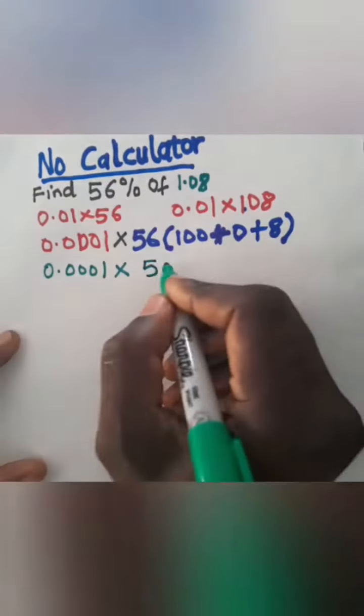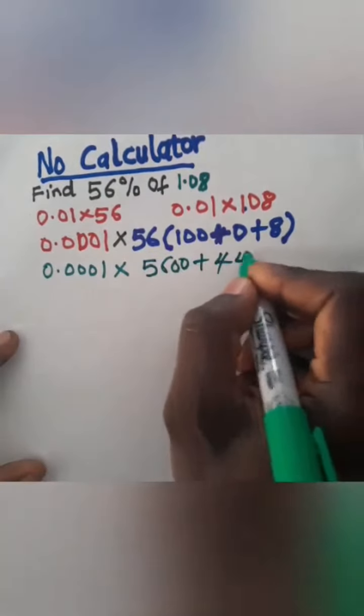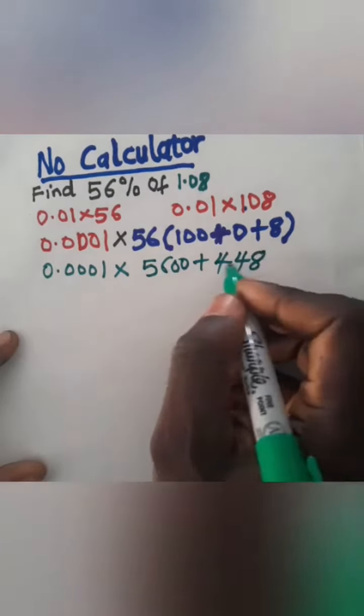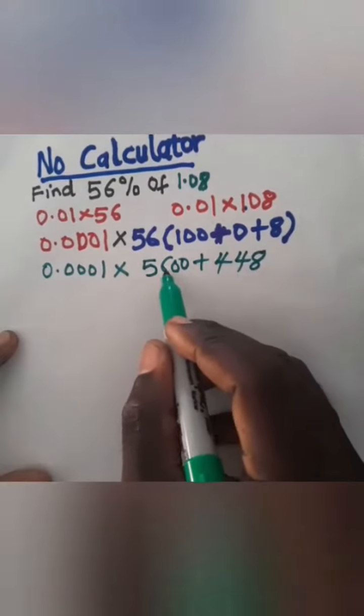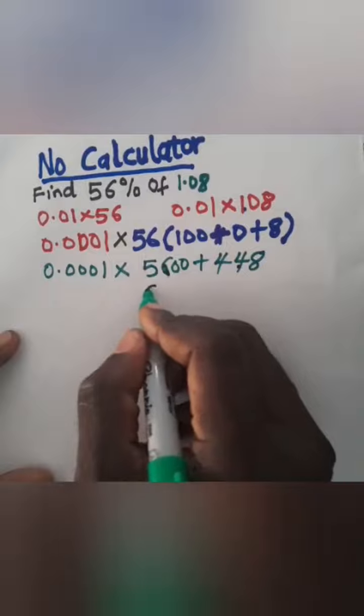So I'm going to add 5600 plus 448. If I add this together, now look at this, you see this is 6, and when you add this to this you are going to have 10, so that means this is going to be 6.